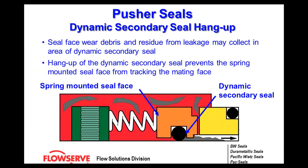Some pusher seal design limitations: because you have a dynamic secondary seal riding on a shaft, if you're in a system with contaminants or high heat, the leakage off the seal face can coke up. Those deposits build up underneath the seal and hang up the dynamic o-ring. These are really problematic in vertical applications with hot hydrocarbons — you can get coking on the inside that plugs up the dynamic seal quickly.